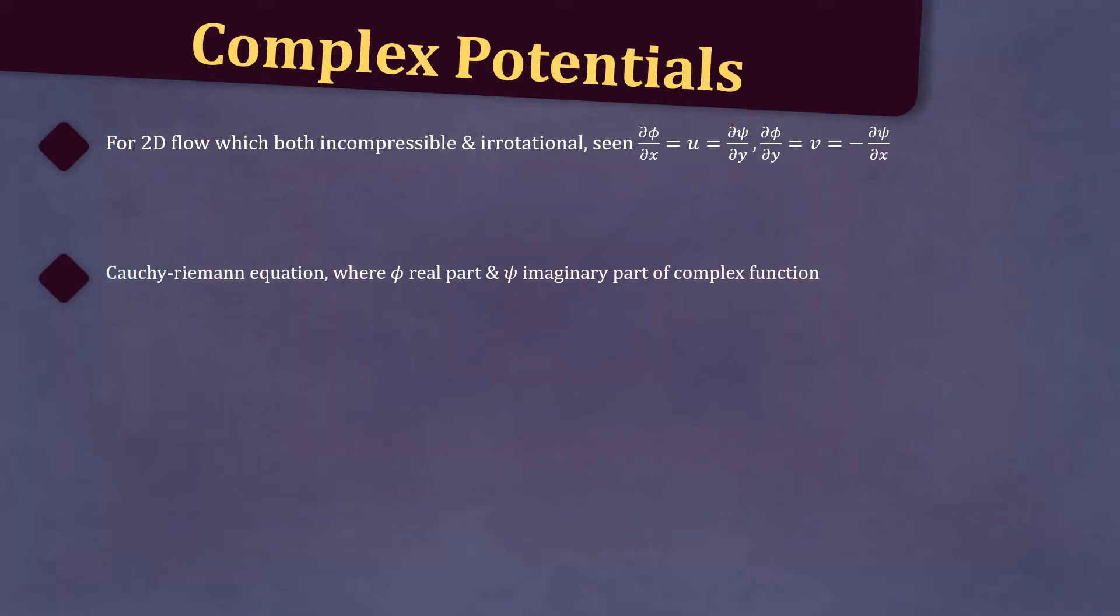We can recognize these as the Cauchy-Riemann equations, where φ is the real part and ψ is the imaginary part of a complex function. The complex potential is defined as w = φ + iψ, where z = x + iy, and is an analytic function of the complex variable z.